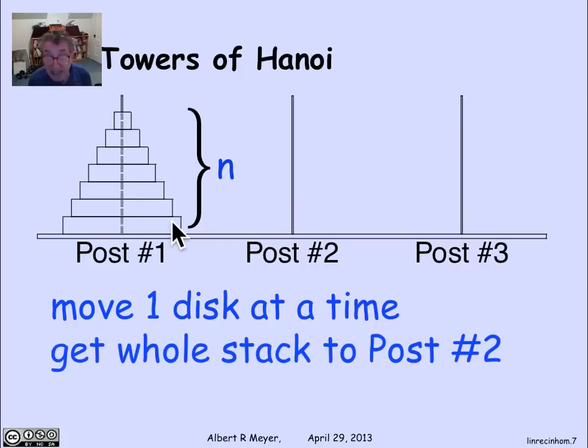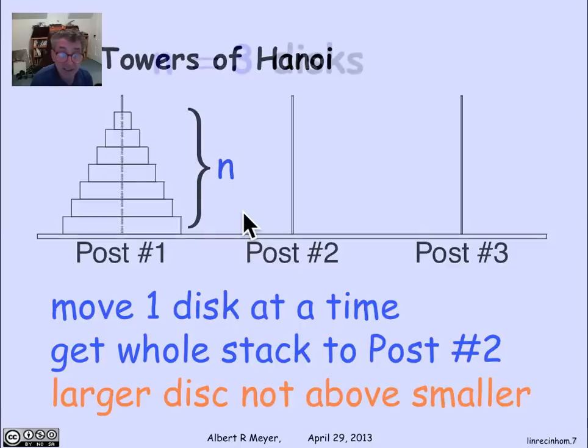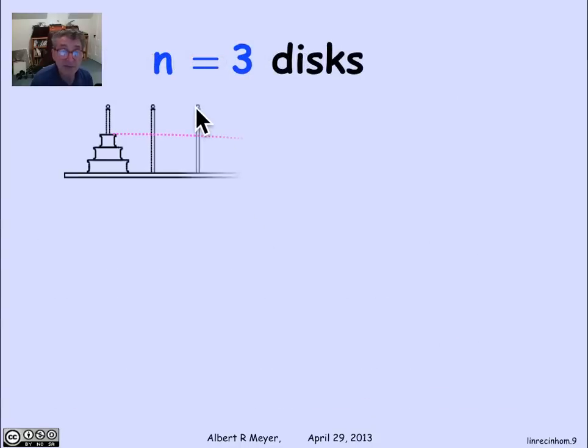Our objective is to get the whole stack into the second post. But the constraint is that when you put a disk down on a pole, you're not allowed to have a larger disk resting on a smaller disk. That's the constraint. Is it possible to do? Can you move this whole stack over to that pole, moving one disk at a time and never having a big disk on top of a little disk? Well, let's play with an example. Suppose I have three disks. There's a picture of three disks.